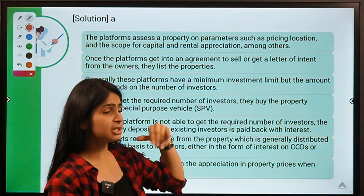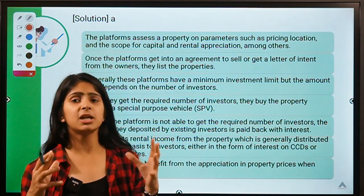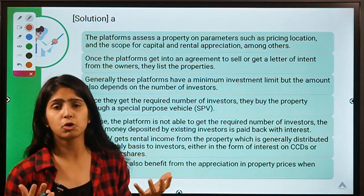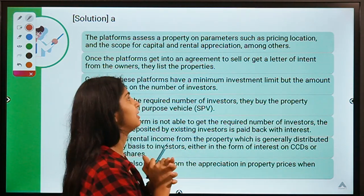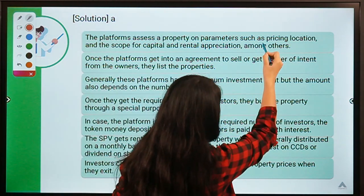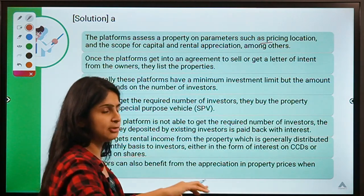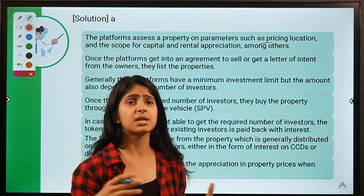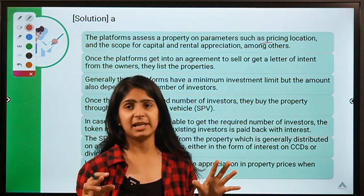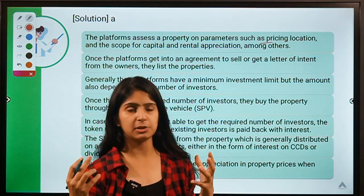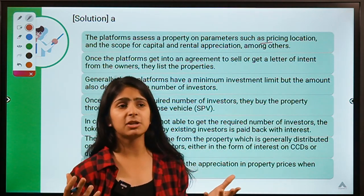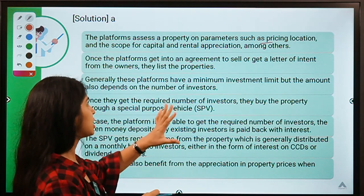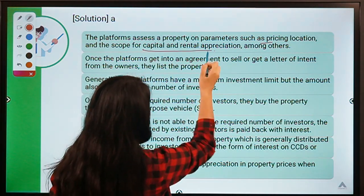These platforms first look for properties that can grow in value or have income-generating capability. They evaluate properties based on pricing, location — whether there are malls, schools, hospitals nearby — and the scope for capital and rental appreciation, meaning the potential for growth in that particular area.